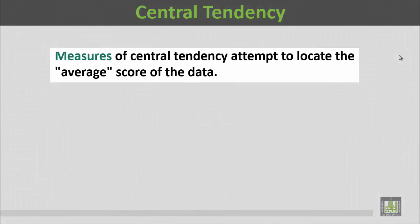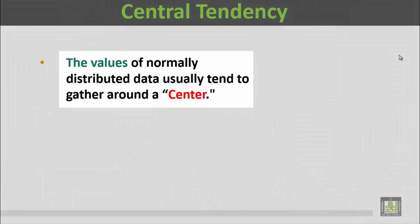Measures of Central Tendency attempt to locate the average score of the data. مقاييس النزع المركزية تحاول قياس مكان المركز أو المتوسط لمجموعة من البيانات. The values of normally distributed data usually tend to gather around the center.